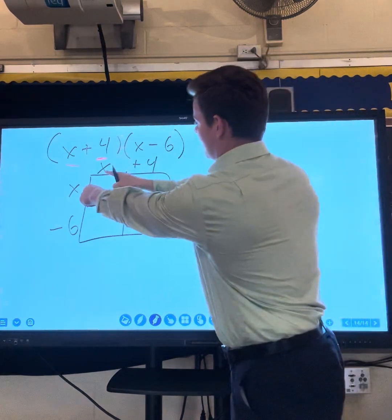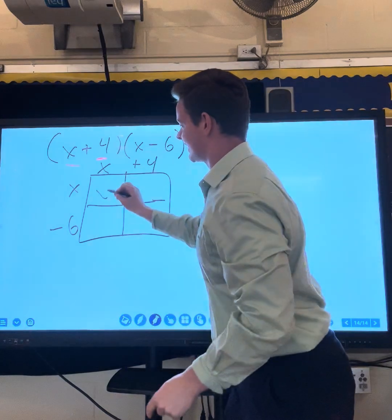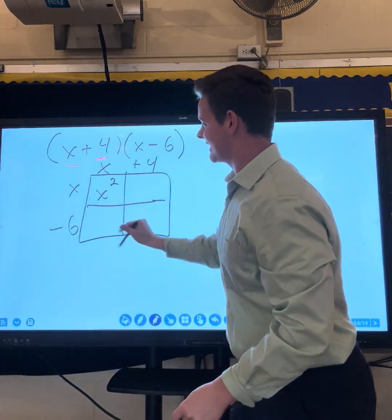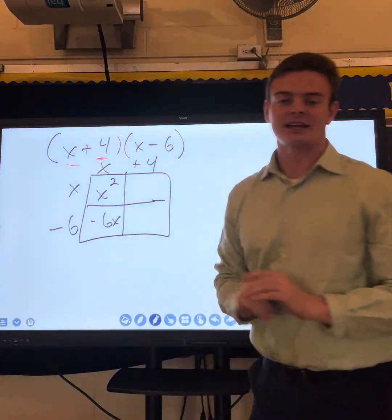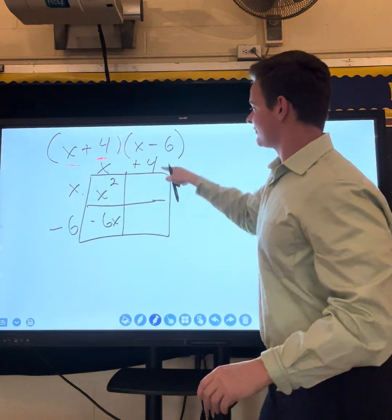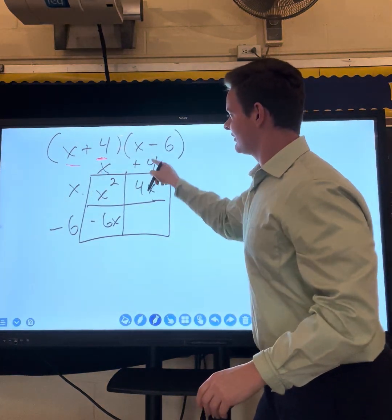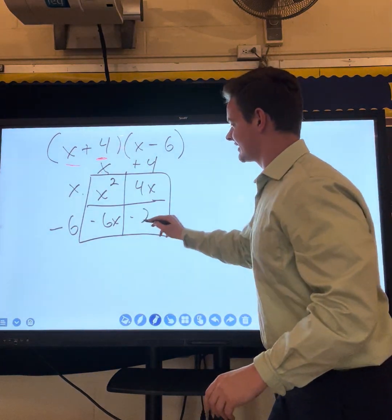Then I just multiply in the grid. x times x, that's x squared. x times negative 6, that's negative 6x. x times 4, that's 4x. 4 and negative 6, that's negative 24.